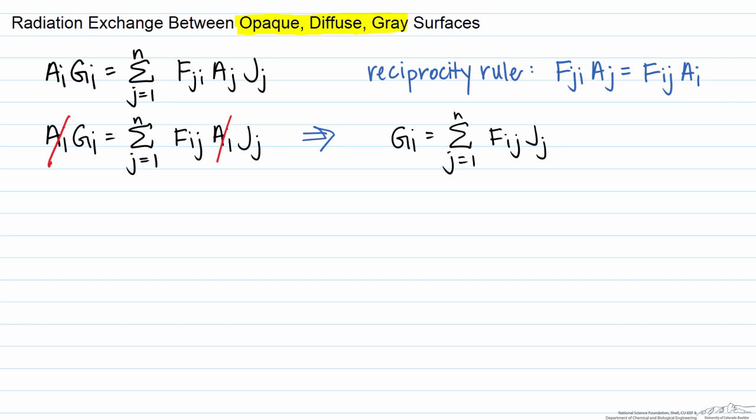Now let's go back to our equation for the net radiative heat transfer from surface i. That equals the area of that surface, the radiosity minus the irradiation.